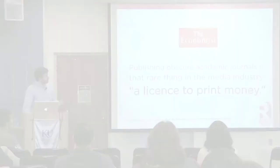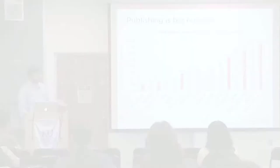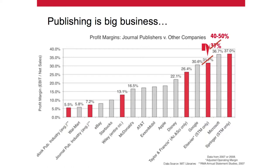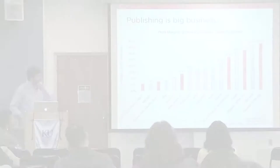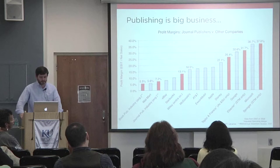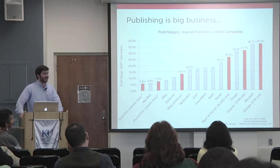The commercial companies that own a lot of these academic journals, particularly the highest-impact journals, are phenomenally profitable. This is a graph of profit margins across a number of industries, but you'll see on the far right Elsevier and Springer — two of the largest academic publishers. Elsevier and Springer are more profitable than Apple, than Google, than ExxonMobil. They're some of the most profitable companies in the world.